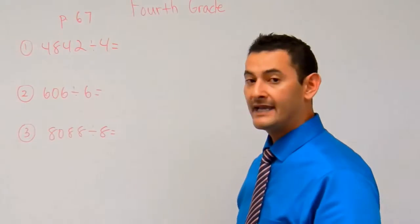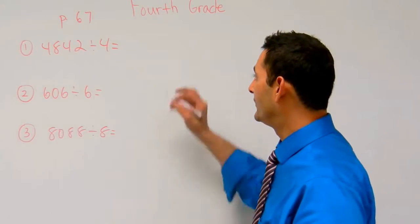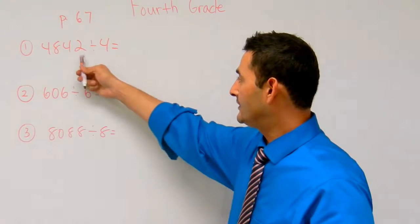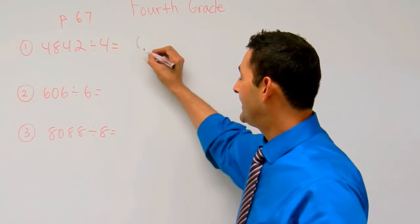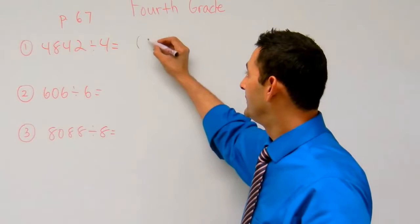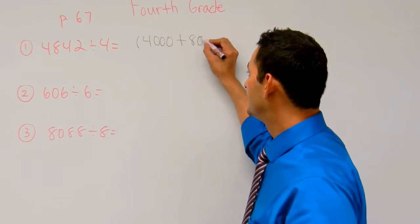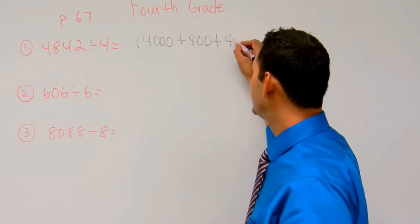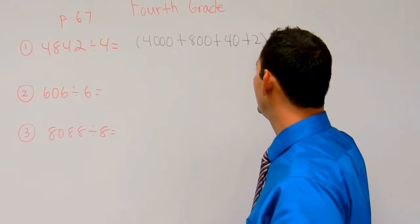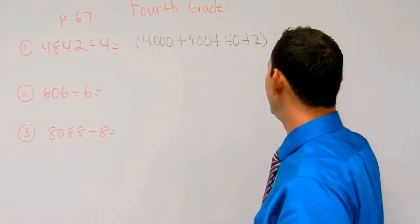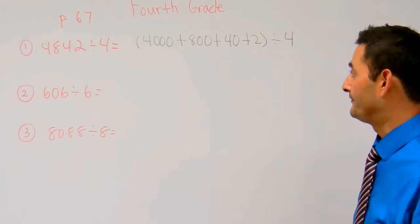Here I have 4,842 divided by 4. So what I'm going to do is break up that 4,842 into 4,000 plus 800 plus 40 plus 2, and they're all going to be divided by 4.